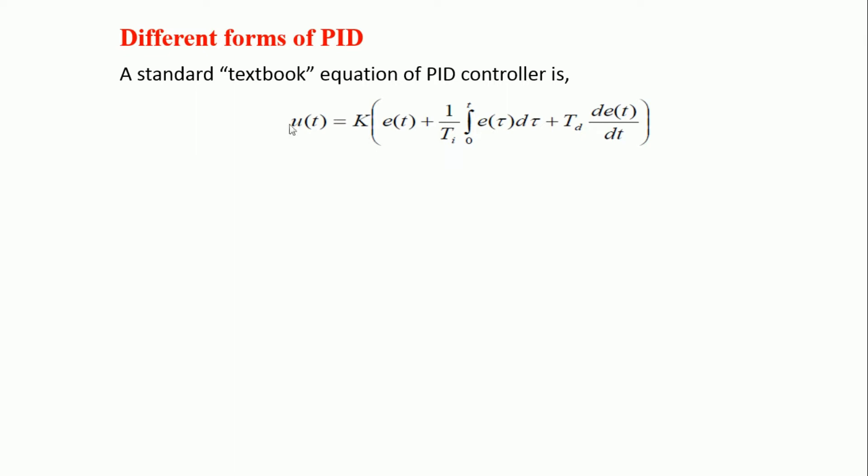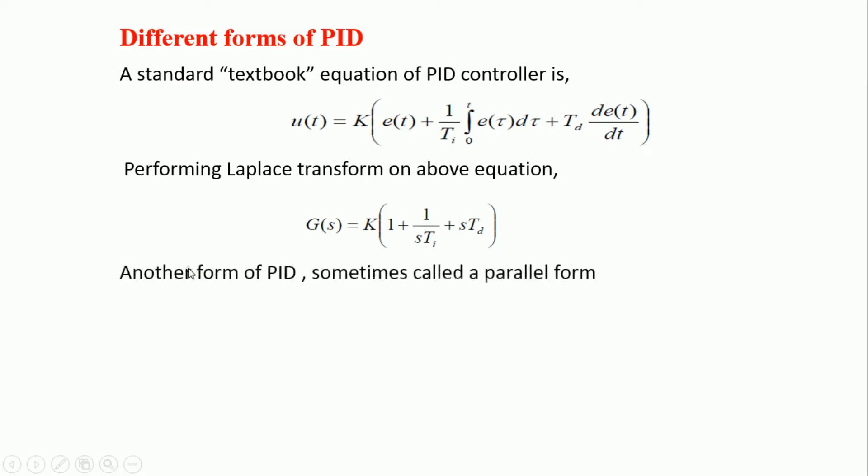Now, if you take the Laplace transform of this equation, we get G(s) is equal to K in bracket 1 plus 1 upon ti that is the integral time 1 into s plus s into td. One of the another form of the PID is also called as the parallel form is like this. If you take the Laplace transform, we get the equation like this.